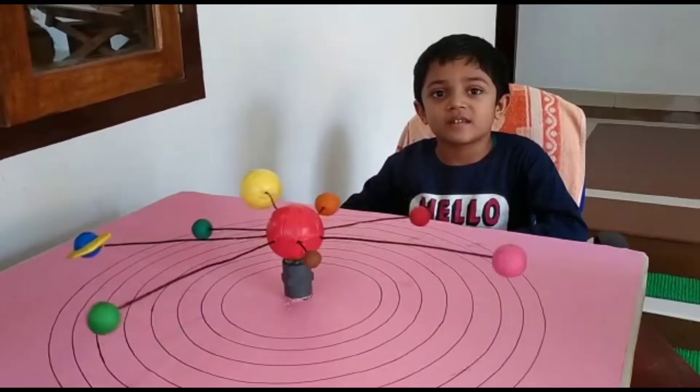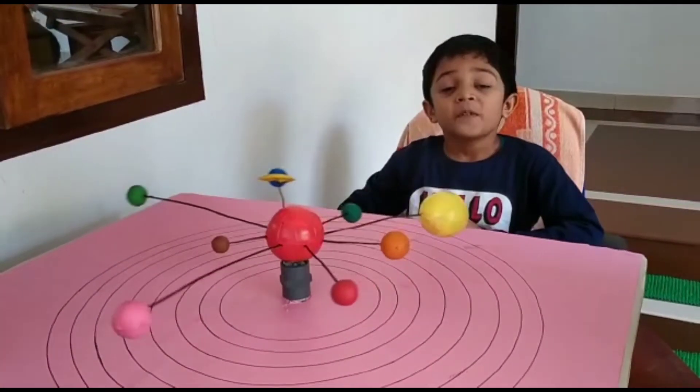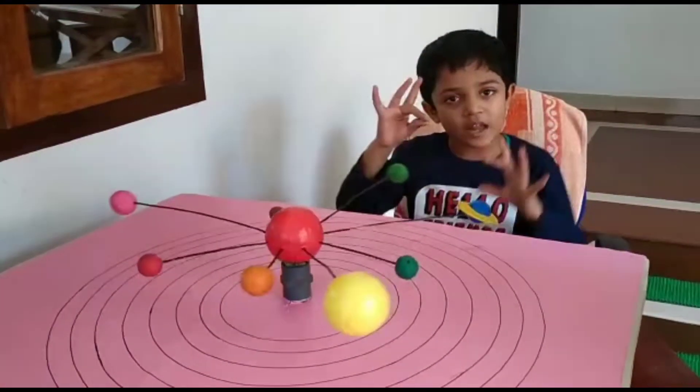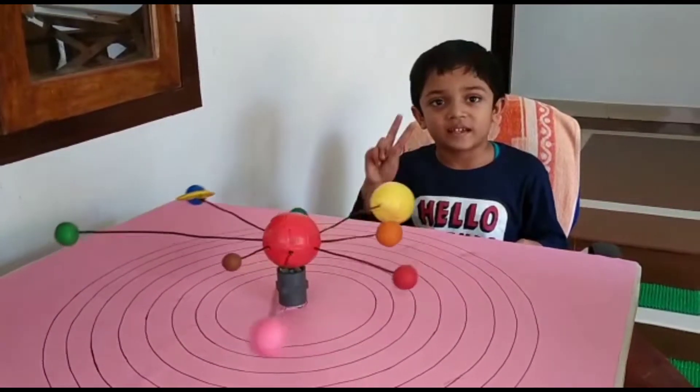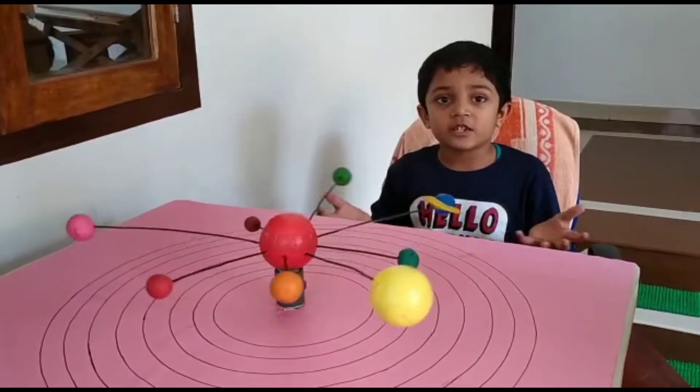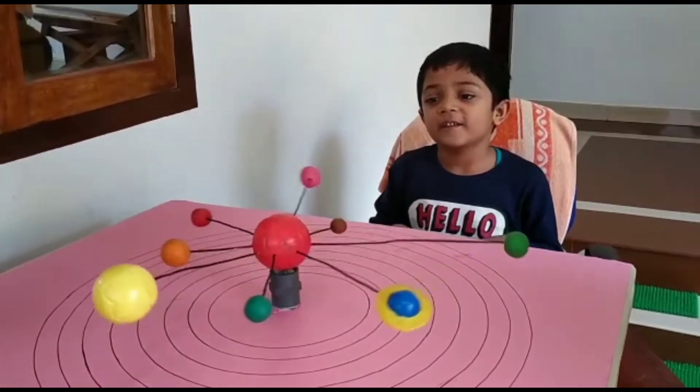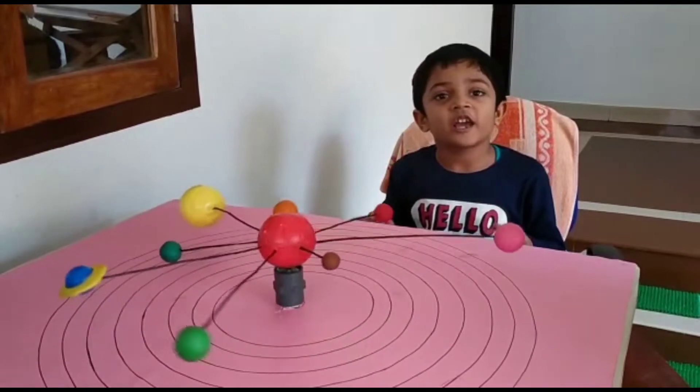Mercury is the first planet. It is the smallest and hottest planet. Venus is the second planet. It is also a hot planet. Earth is the only planet with life.